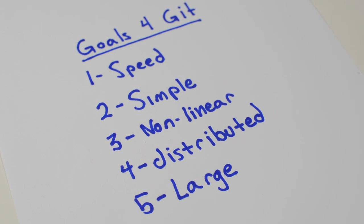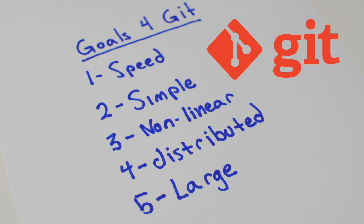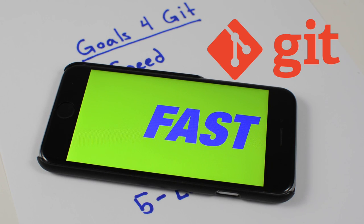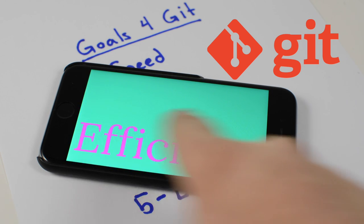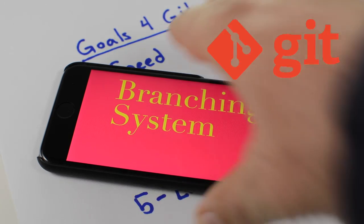Able to handle large projects like the Linux kernel efficiently, both in terms of speed and data size. Since its birth in 2005, Git has grown and matured to be easy to use and yet retain all of those initial qualities. It's incredibly fast, very efficient with large projects, and has an incredible branching system for non-linear development. Git is free and open source and primarily used on the command line, and that's why it's kind of super scary for us noobs — but don't worry, we'll get into that later.